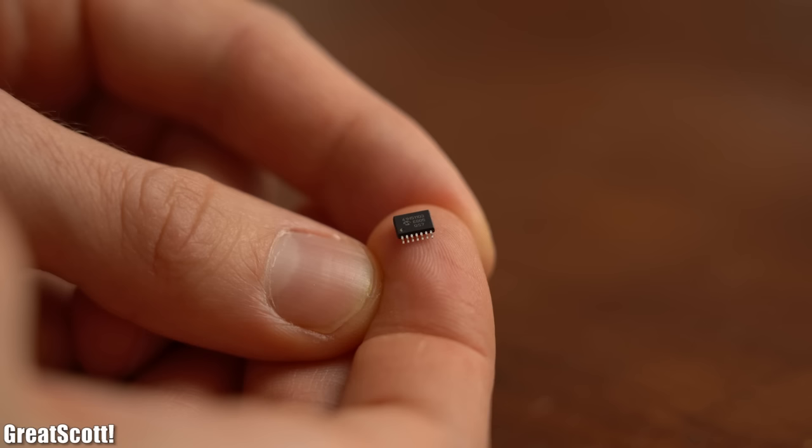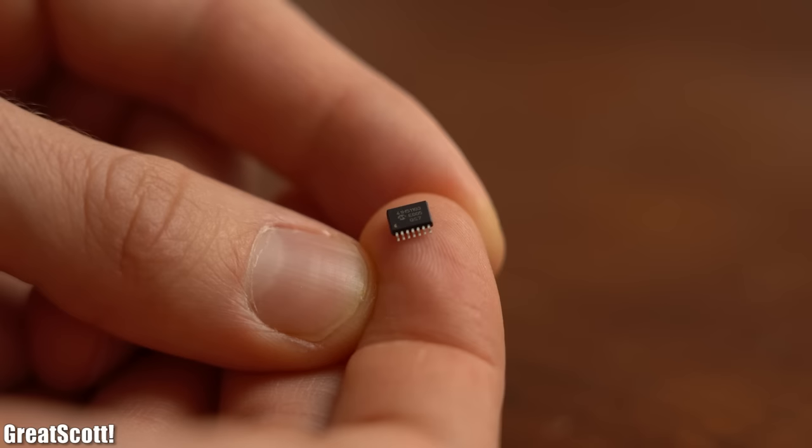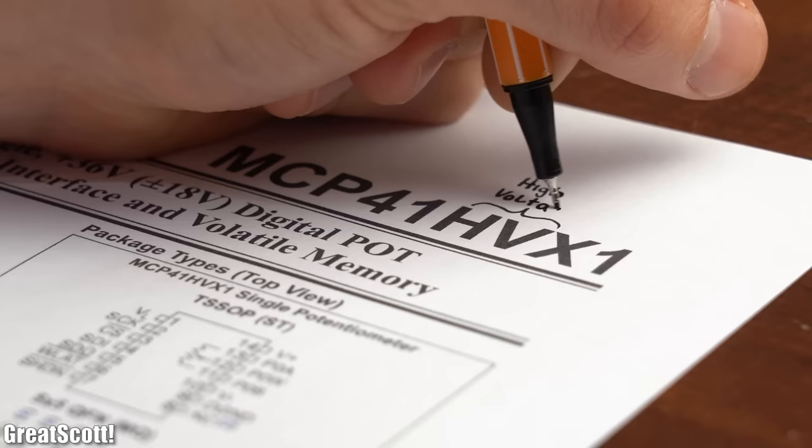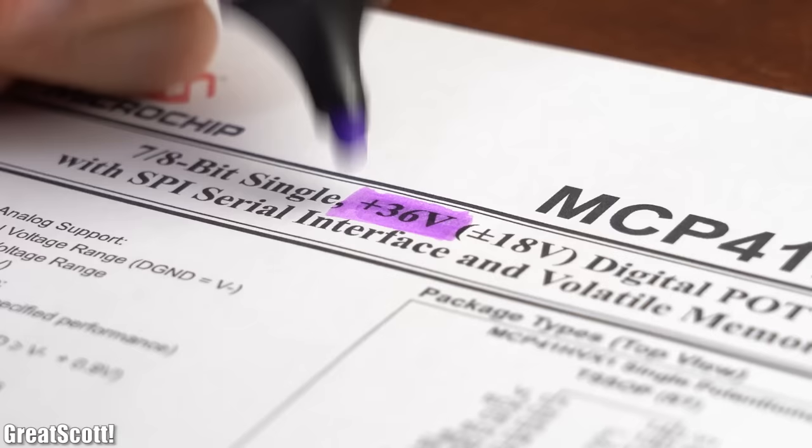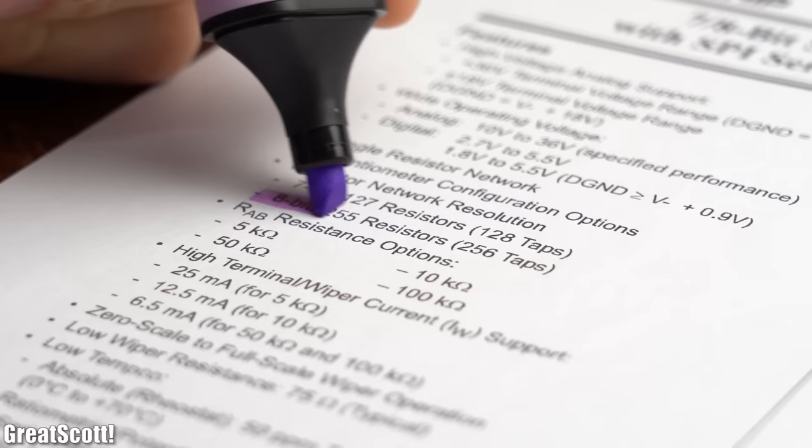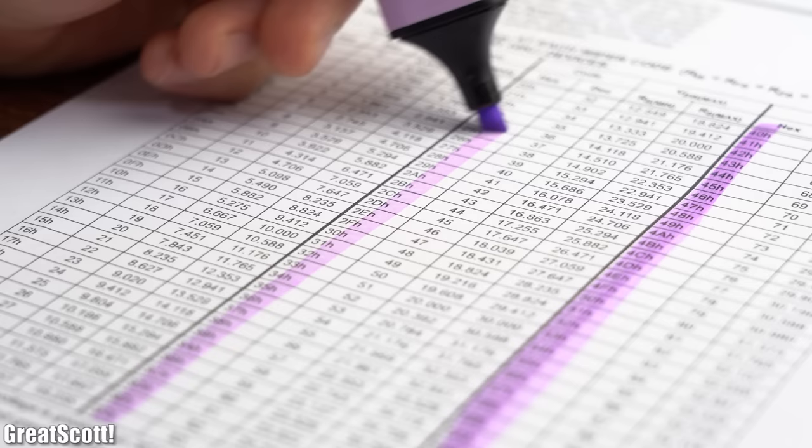But luckily I got this MCP41HV51 10K just in time. The HV apparently stands for high voltage which is true because we can apply a maximum of 36V to it. The resolution of the IC is also bigger than before, but unfortunately we have to deal with SPI codes in order to control it.